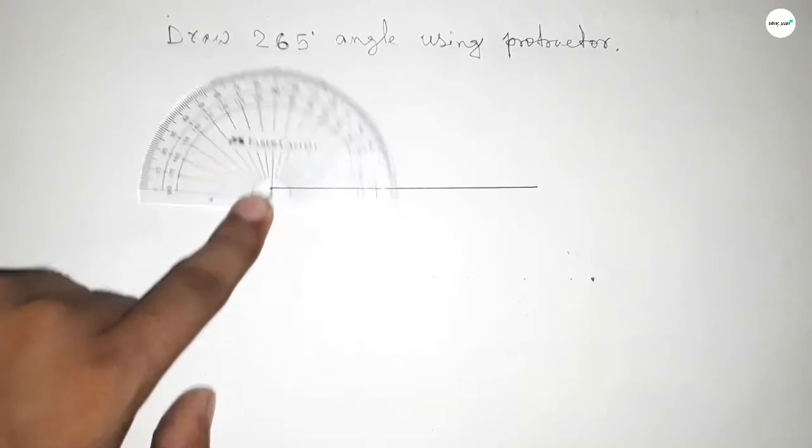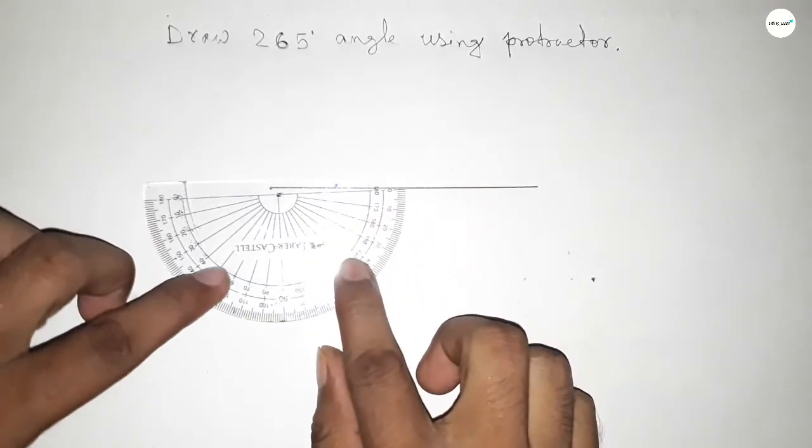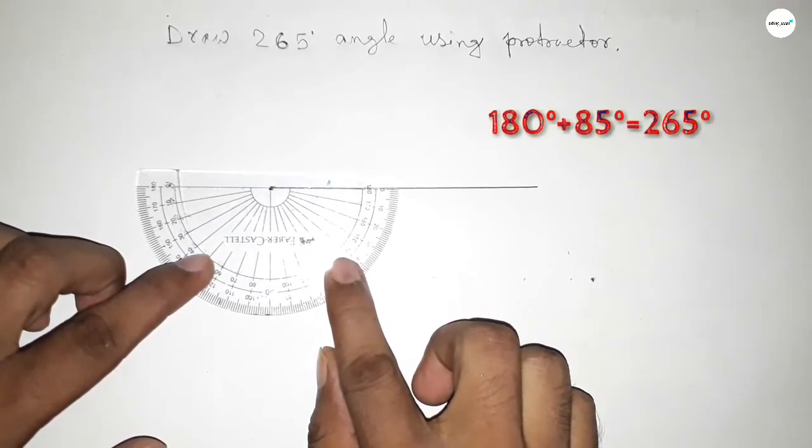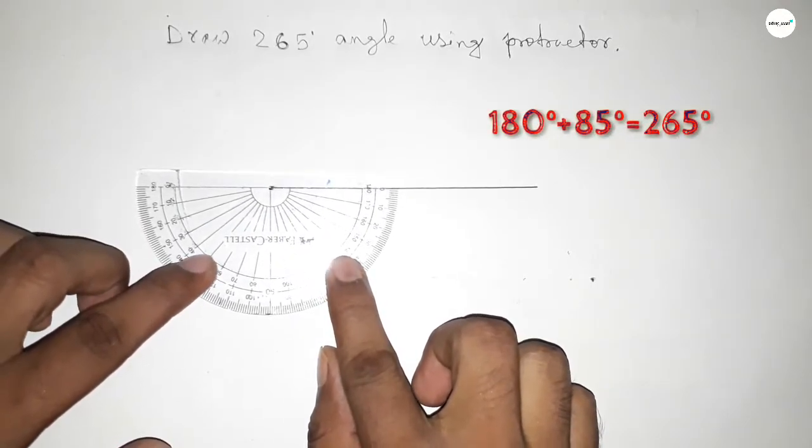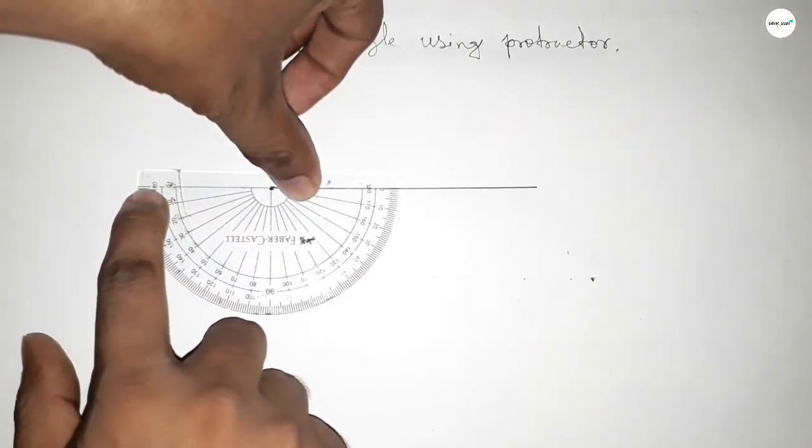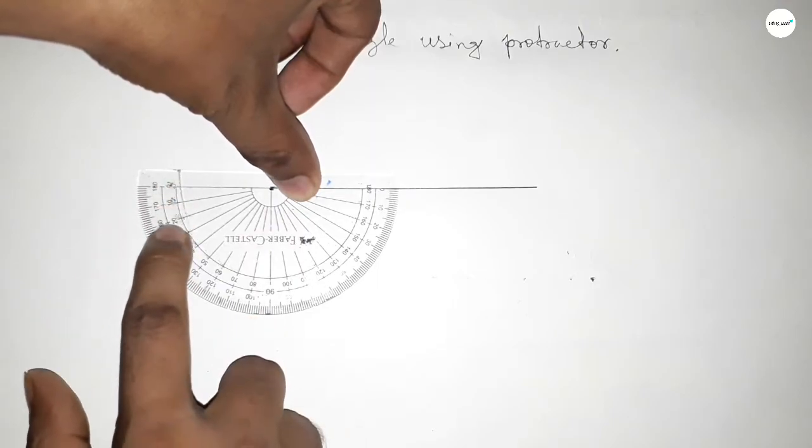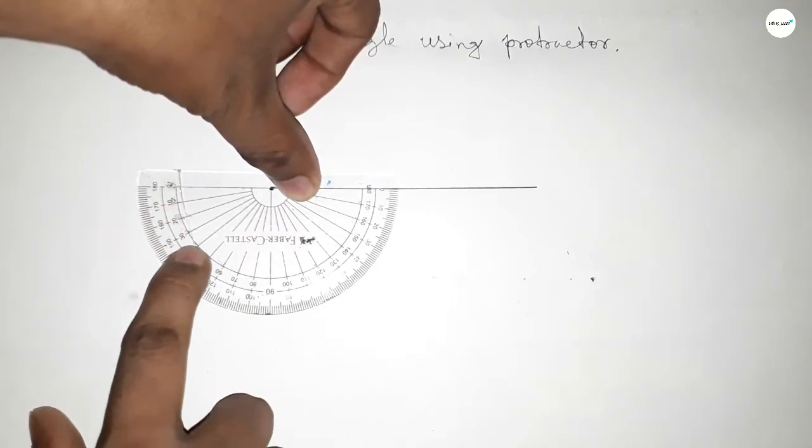180 degrees, but we have to draw a 265-degree angle, so we have to add 85 degrees angle with 180 degrees. So for 265 degrees, this is 180 degrees and this is 10, 20, 30, 40...